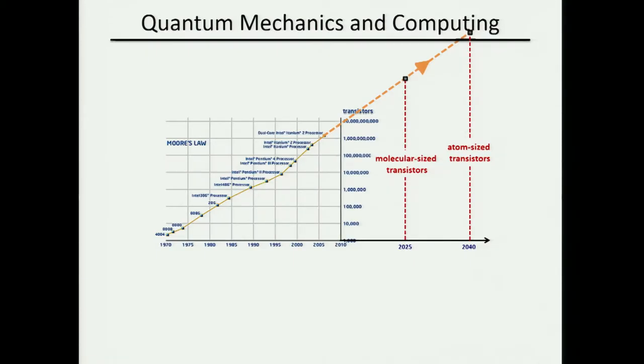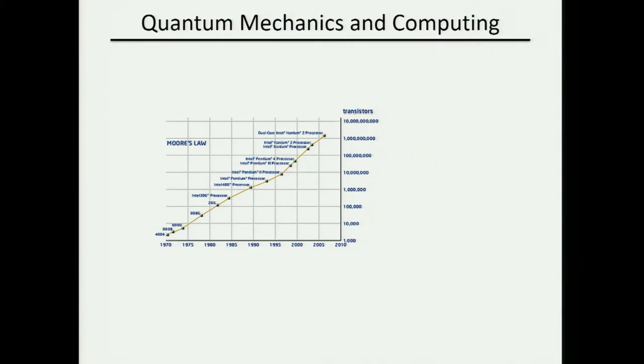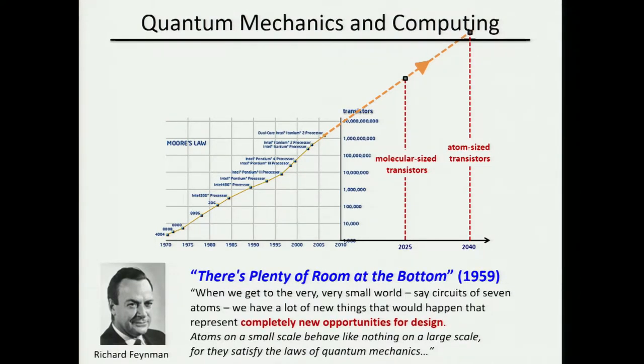Richard Feynman gave this talk in 1959 at an American Physical Society meeting. There's plenty of room at the bottom. He was intrigued by the fact that you could make circuits out of solid state, and it didn't have to be big. He even muses, if you make circuits out of a few atoms, there are completely new opportunities for design.